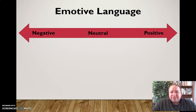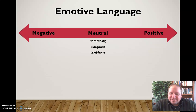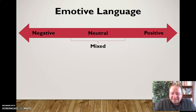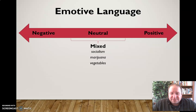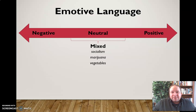Sometimes language is neutral — it doesn't have any real connotation for most people. Something like computer is a neutral word for most people, unless you have a really bad or really good experience with computers. Same with telephone — it's just a thing. Other times things have a mixed connotation that can go either way. You talk about socialism or marijuana or vegetables — for some people vegetables are amazing, for others they avoid them at all costs. With marijuana, depending on your view, some people have a positive connotation, others a very negative one, others are neutral.